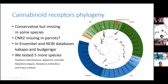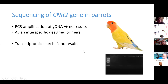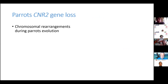To test this, we designed avian interspecific primers for the cannabinoid receptor two gene and performed PCR amplification of gDNA with no results. We also searched transcriptomic sequences obtained from parrots, also with no results. This gene loss is probably the effect of massive chromosomal rearrangements which happened during parrot evolution and which probably caused this gene loss.